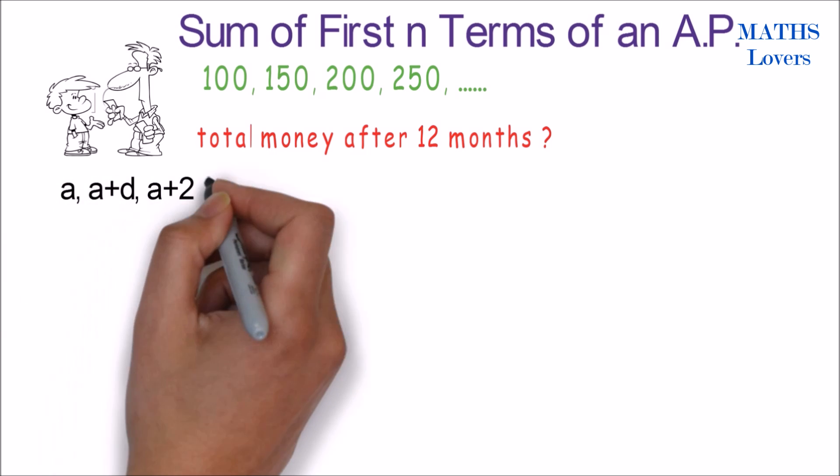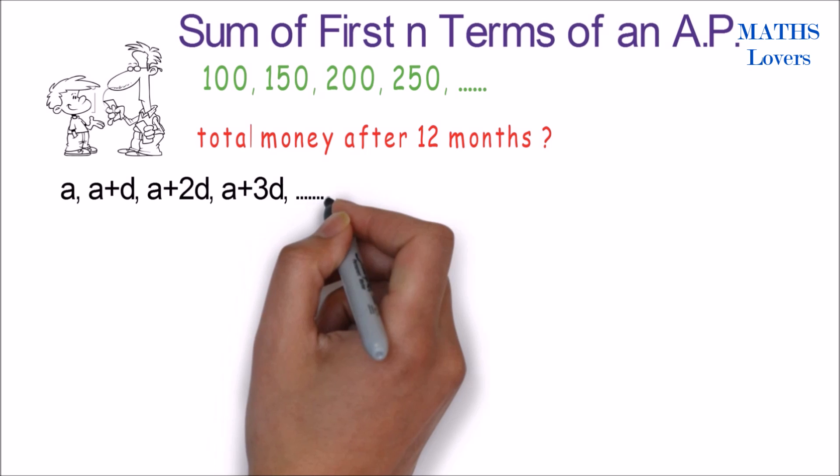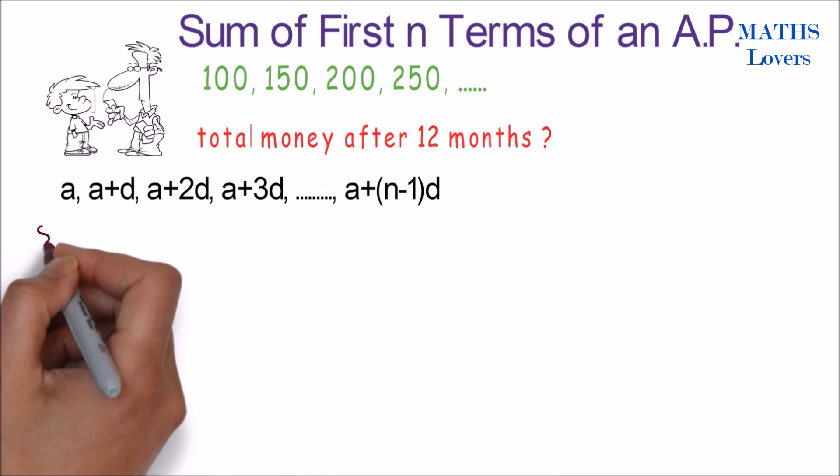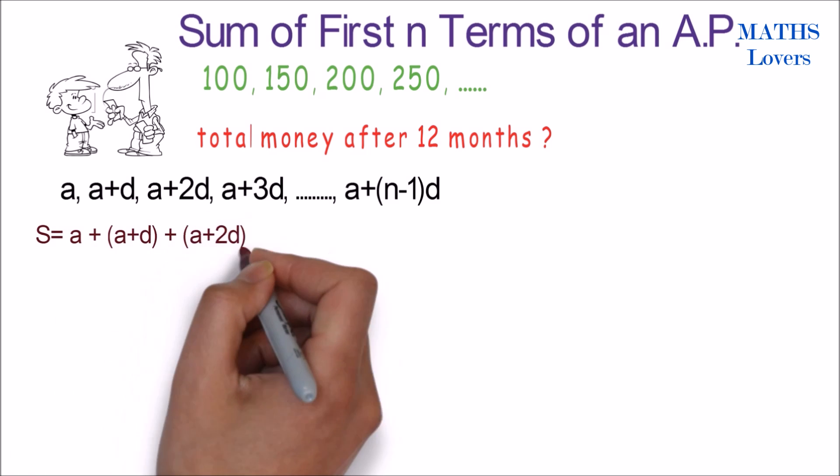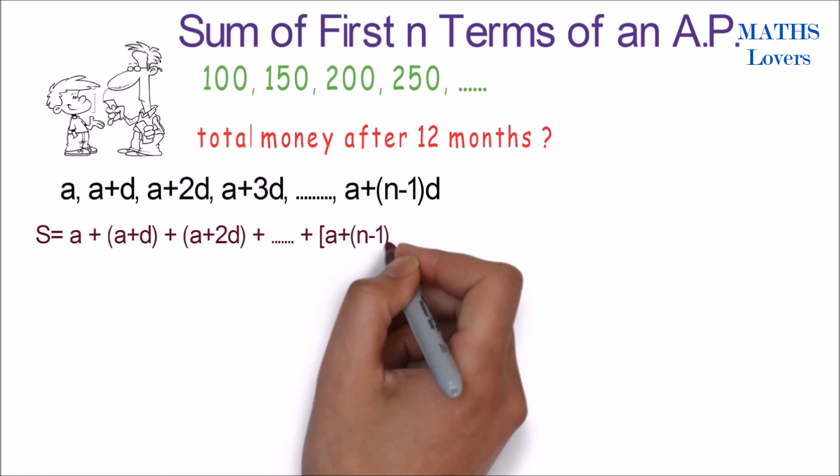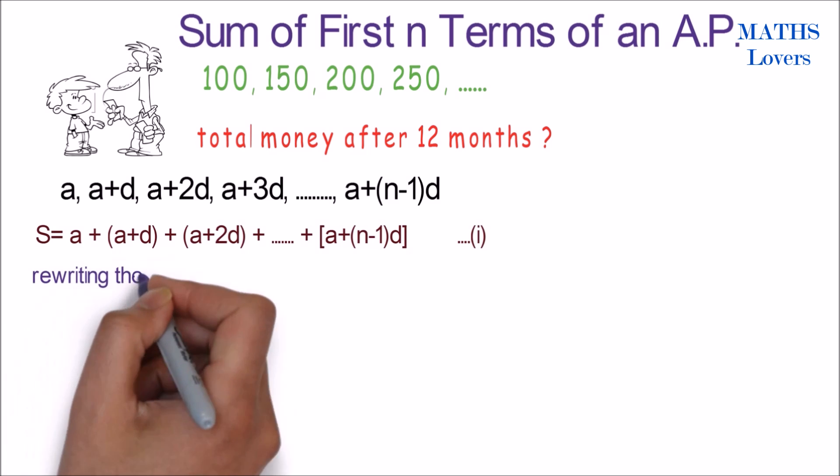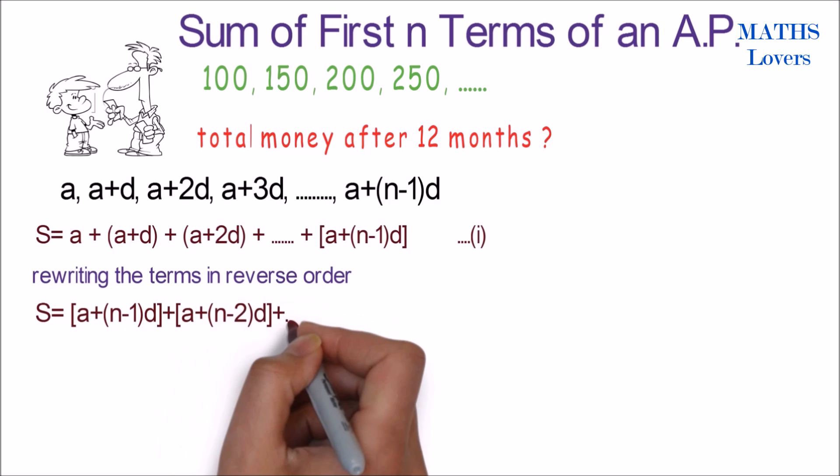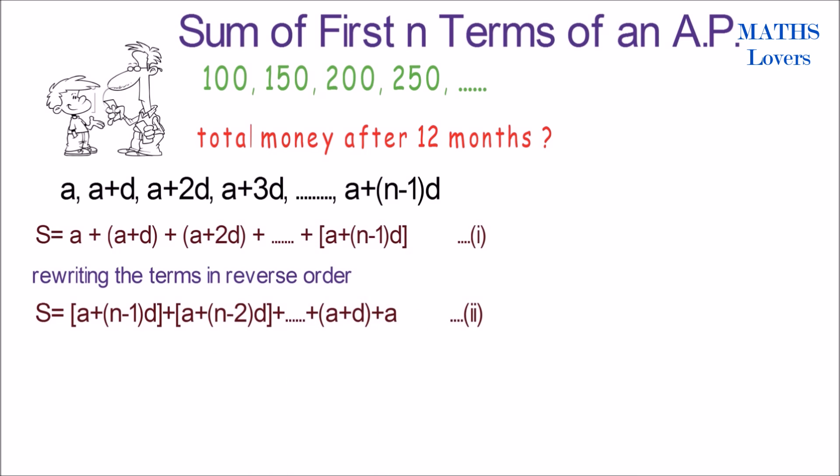Let's assume a general AP: a, a plus d, a plus 2d, a plus 3d, and last term a plus n minus 1 times d. Sum will be S equals sum of all these terms. Let it be equation 1. Now let's rewrite the terms in reverse order. Then we will get S equals this. On adding equations 1 and 2 term-wise, like first term of equation 1 and first term of equation 2, and so on.